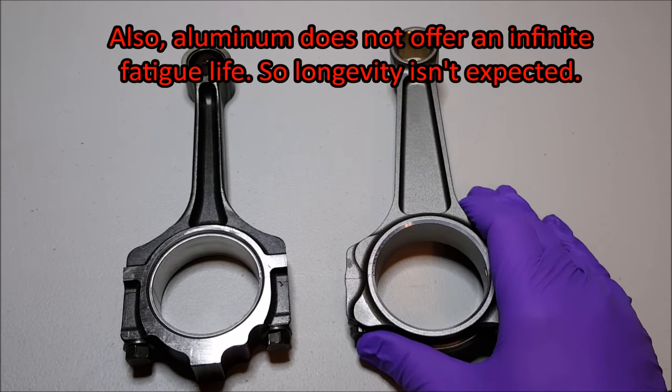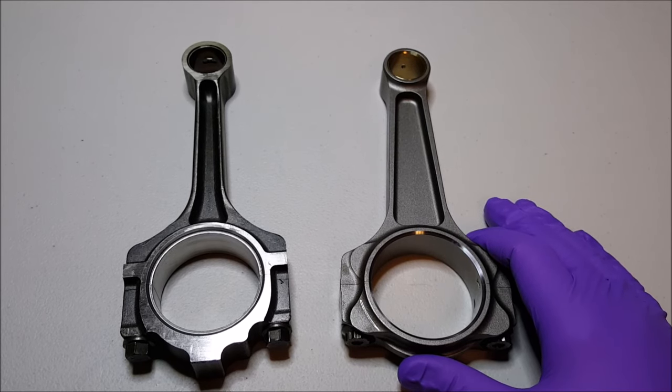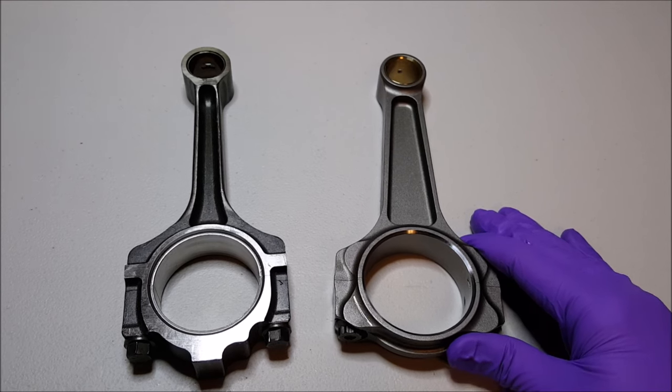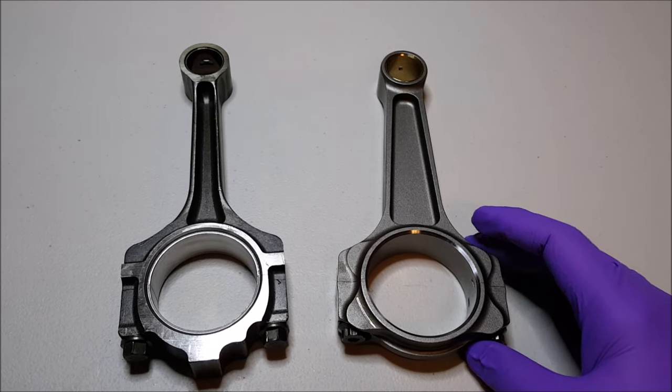So because this engine is going to be basically street and almost a daily driver, I figured I'd just go with billet forged 4340 I-beams, and they're going to be strong enough. I'm not going to go over 1,500 horsepower with my setup anyway.